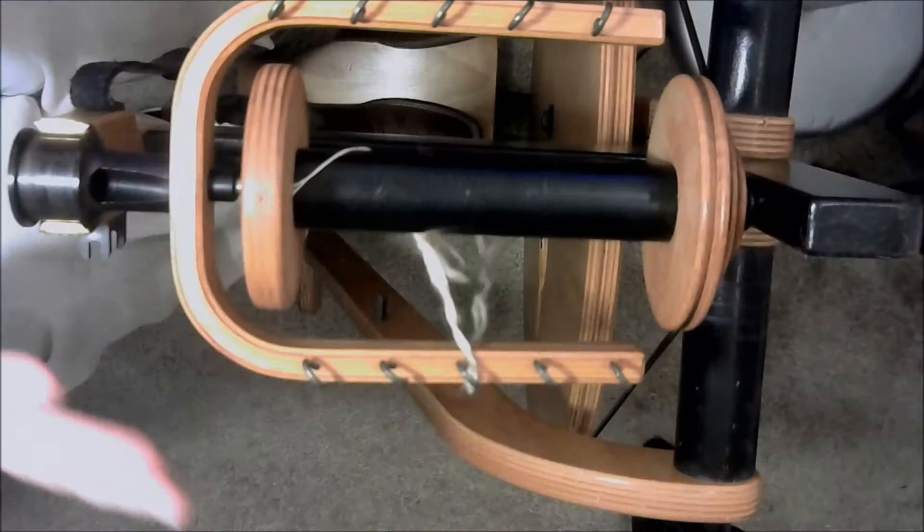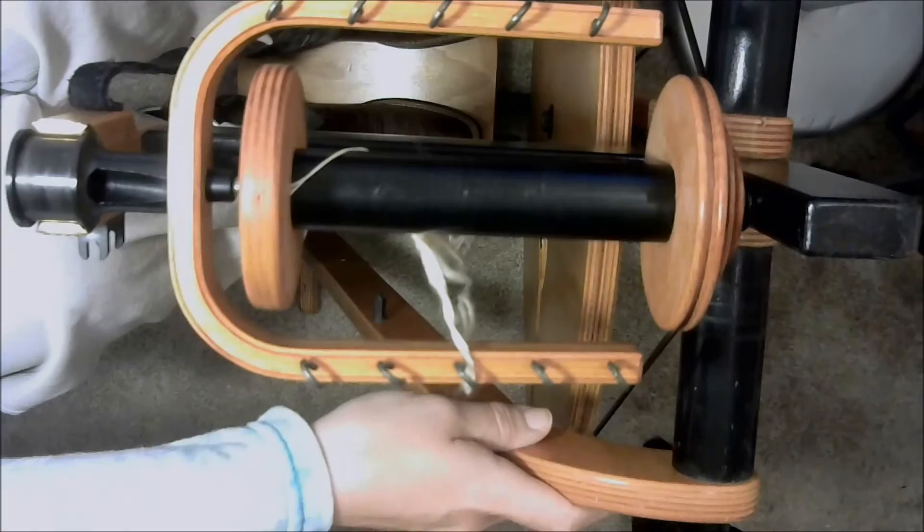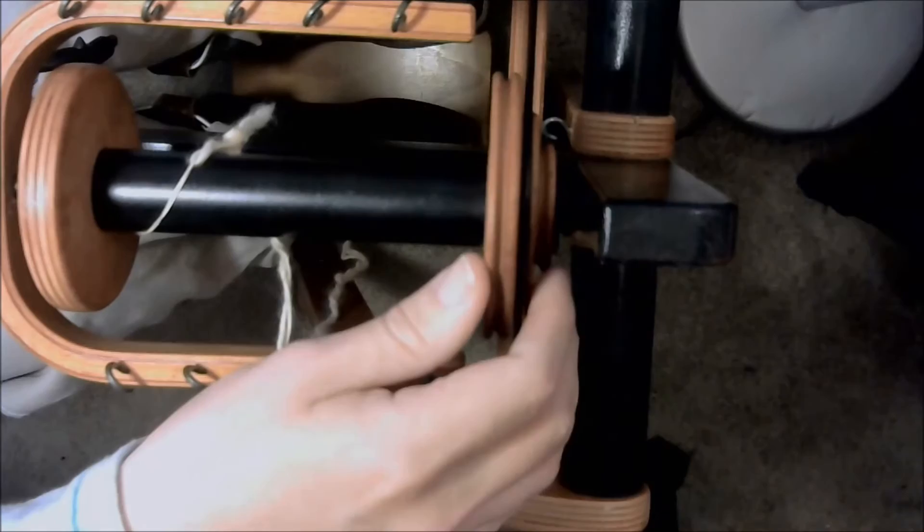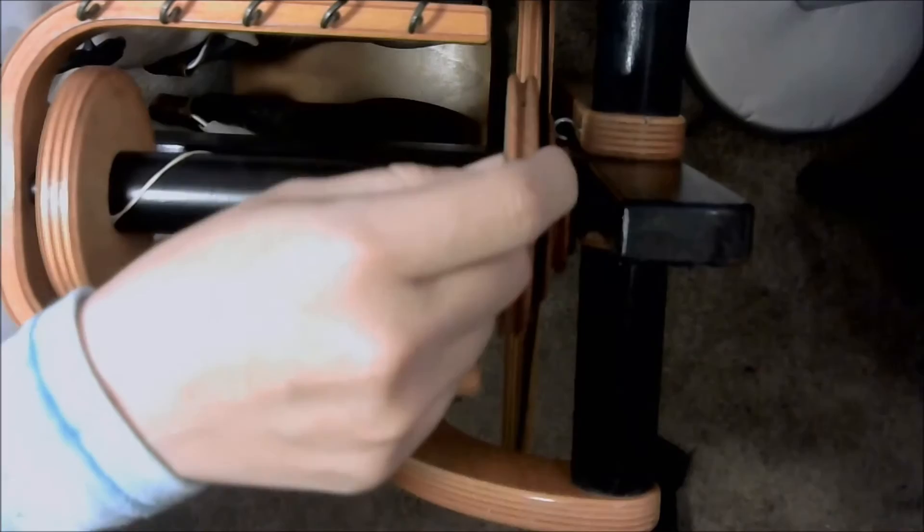All right, welcome back. So now I'm going to get my bobbin, flyer, everything set up so that I can spin the rest of my silk. Here's how I've done it. Let me tilt this up a little bit. You see I have the drive band here and it's attached to my middle whorl in the back.